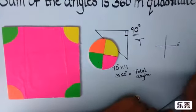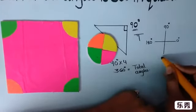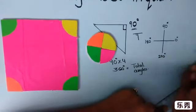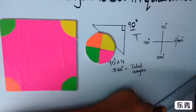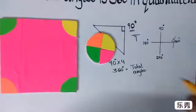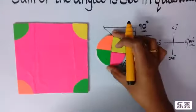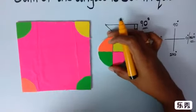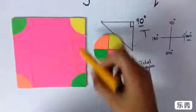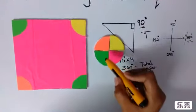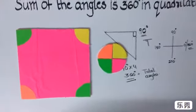0 degrees, 90 degrees, 180, 270, and again the total is 360 degrees, right? So the total angle is 360 degrees. So by this we can say that the sum of the angles in all the vertices of the quadrilateral, the total angle is 360 degrees. Thank you.